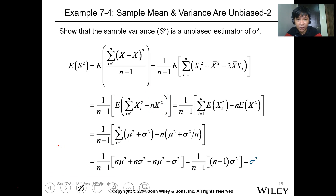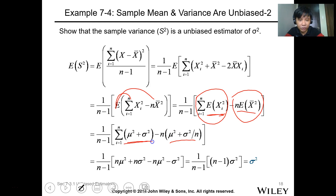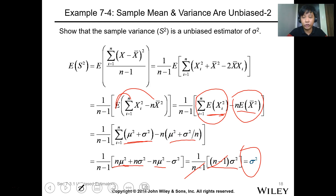Simplifying further, we distribute the expected value: the expected value of xi-squared equals mu-squared plus sigma-squared, and n times the expected value of x-bar-squared equals n times (mu-squared plus sigma-squared/n). Taking the full expression and dividing by n minus 1, the n minus 1 terms cancel, yielding sigma-squared. So the estimated average of all sample variances equals the population variance.